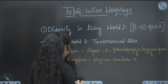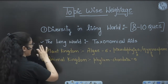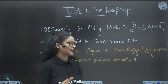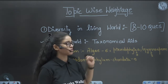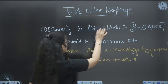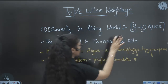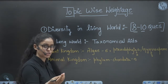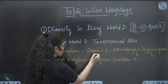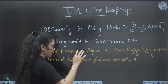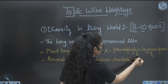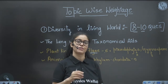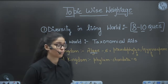This is the topic-wise weightage for 11th class. The first unit is Diversity in the Living World, with chapters like The Living World. Analyzing past four to five years of questions, taxonomical aids is a topic you cannot skip. This whole unit contains eight to ten questions. Plant Kingdom: Algae has six questions asked in past years; Pteridophyta three; Gymnosperms three. Animal Kingdom: Phylum Chordata is very important — five questions from this topic alone.